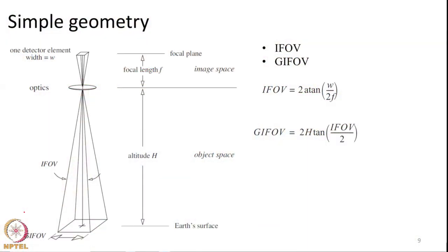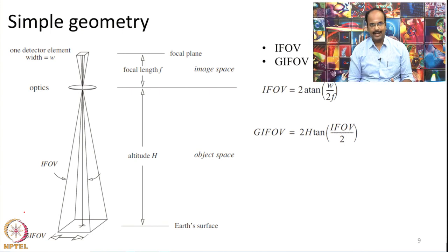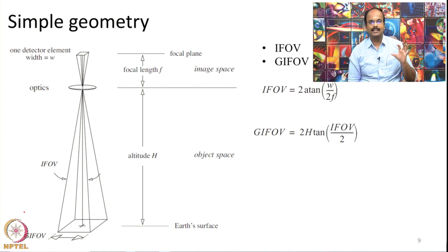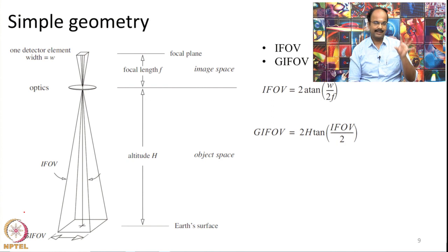Now we have seen how data is being collected — the simple mechanism of data collection. Next we are going to enter into the important concept of spatial resolution. Each sensor has 4 specific characteristics: spatial, spectral, radiometric, and temporal resolutions. These 4 will define the data collected by the system and also for which applications the data can be used. Everything will be defined by these 4 characteristics. Now we are going to start with looking at the concept of spatial resolution.